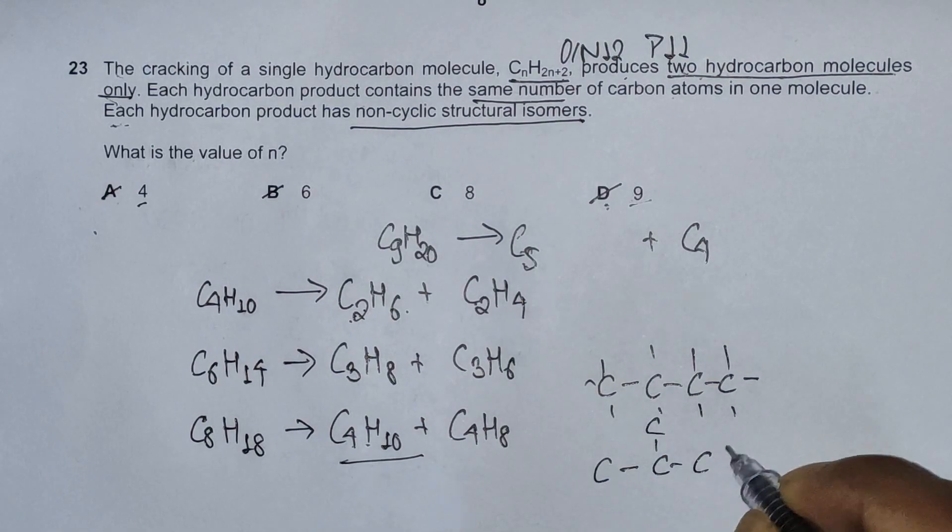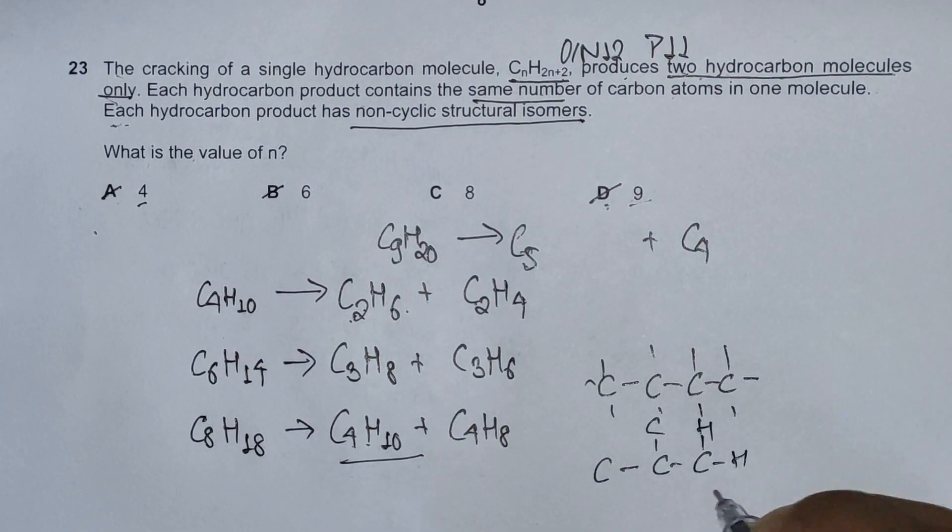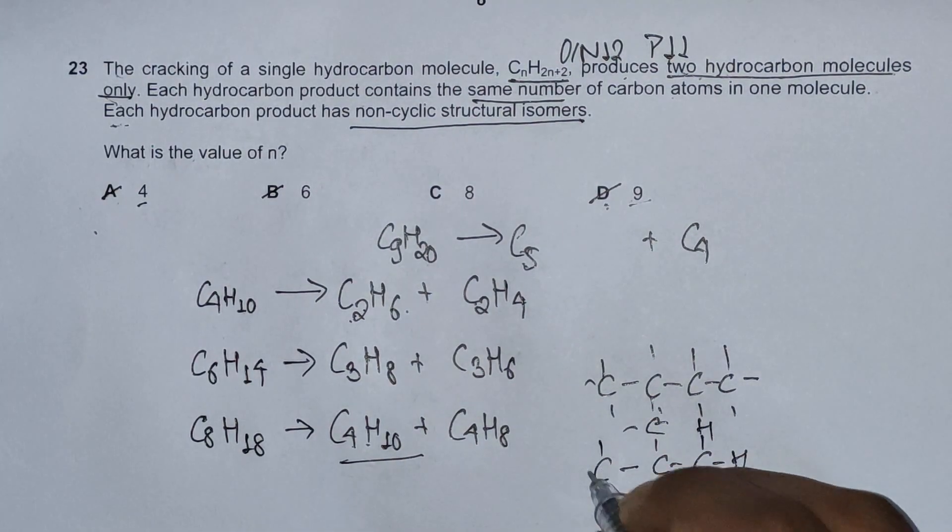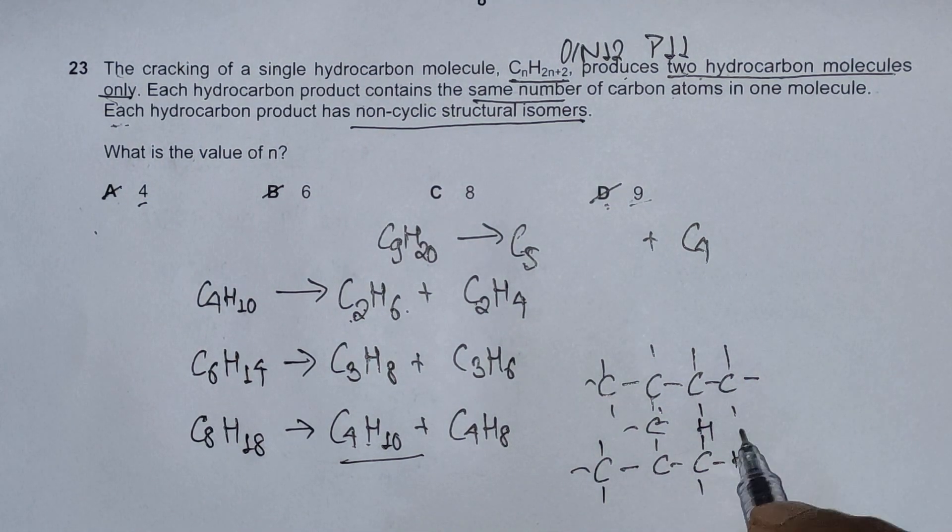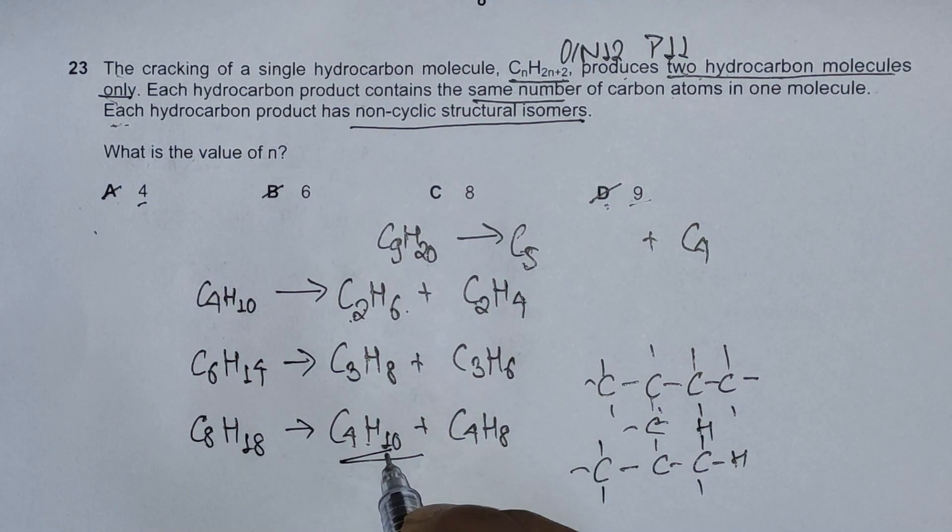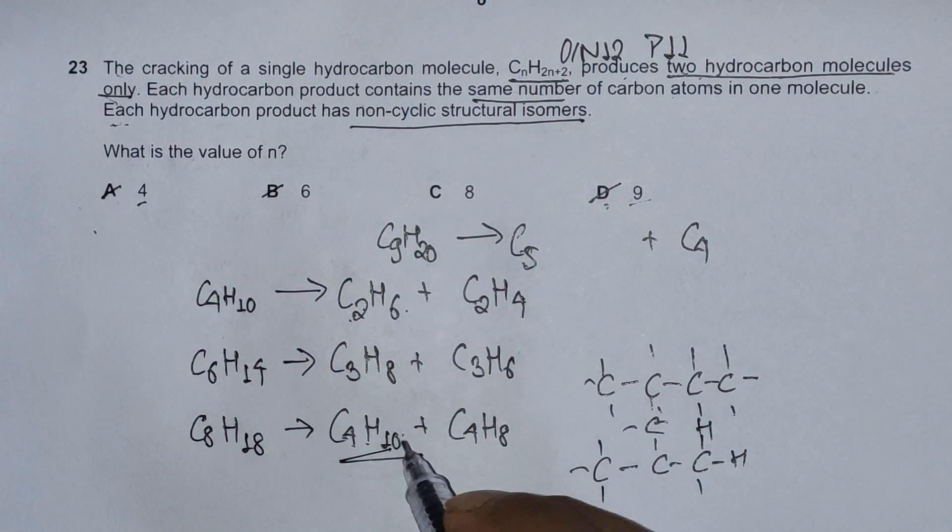We can have this following structure: hydrogen all over here. This structure is 2-methylpropane. So we can construct or create structural isomers out of the first product.